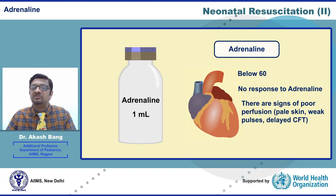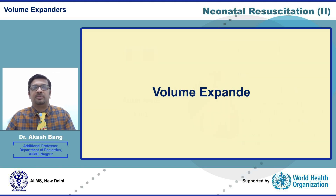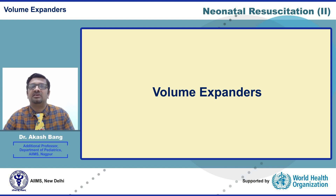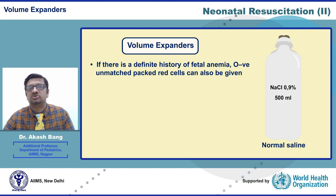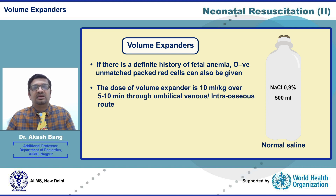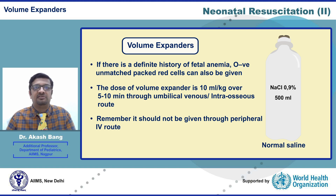Additionally, if there are signs of poor perfusion — such as pale skin, weak pulses, delayed capillary filling time, or history of acute blood loss during delivery — then consider volume expanders. The best recommended volume expander is normal saline. If there is a definite history of fetal anemia, O-negative unmatched packed red cells can also be given. The dose is 10 ml per kg over 5 to 10 minutes through umbilical venous or intraosseous route, but it should never be given through a peripheral IV route.